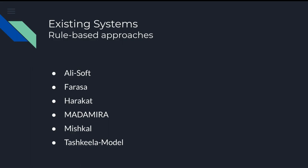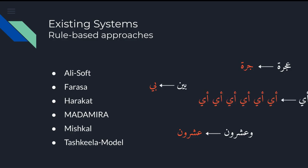Random examples are shown in this slide, where some input words might lose letters in the output, such as 'Aajra' becomes 'Jara', and 'Waishron' becomes 'Aishron'. Some words might be duplicated multiple times, like the word 'Ay'. Some characters are added, like in 'Lilladhi', or duplicated like 'Yuhadzin', or a dagger alif is added like in 'Arrahman', which is a character that is usually read but not written. All systems provide diacritization as one of their services, so we decided to include them in our comparison despite these issues, except for AliSoft due to the excessive amount of issues in the output. Other models' outputs were fixed manually, except for Harakaat, where we skipped the 140 lines that had issues.